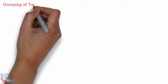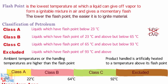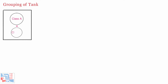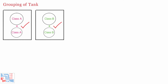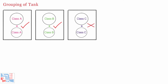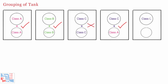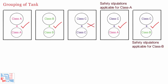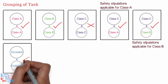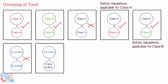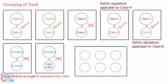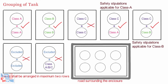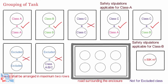Now let's talk about grouping. Grouping of petroleum products for storage shall be based on product classification. Class A and Class B petroleum may be stored in the same dike enclosure. Class C petroleum should preferably be stored in a separate enclosure; however, where it is stored in a common dike with Class A or B, all safety stipulations applicable for Class A or B respectively shall apply. Excluded petroleum shall be stored in a separate dike enclosure and shall not be stored with Class A, B, or C petroleum. In a dike, tanks shall be arranged in maximum two rows so that each tank is approachable from the surrounding road. Tanks having 50,000 cubic meter capacity and above shall be laid in a single row.